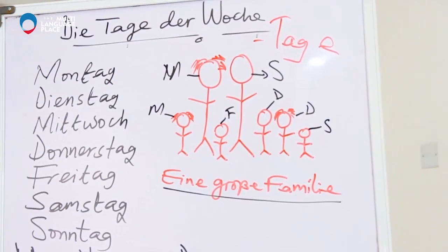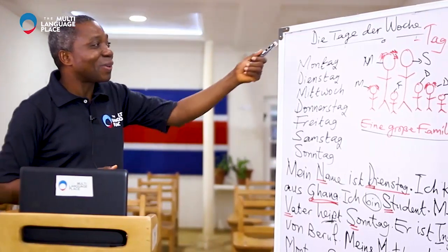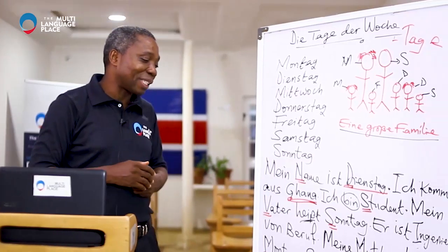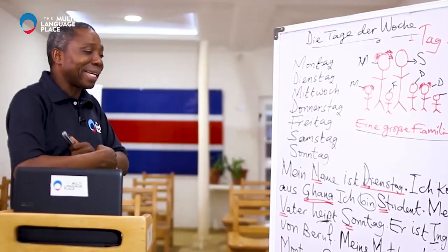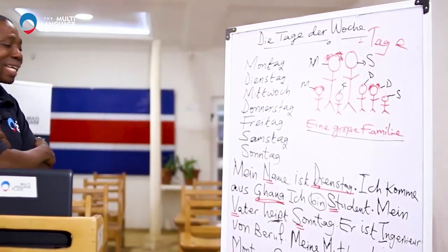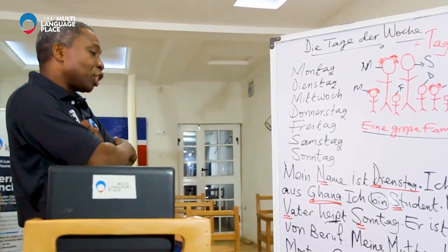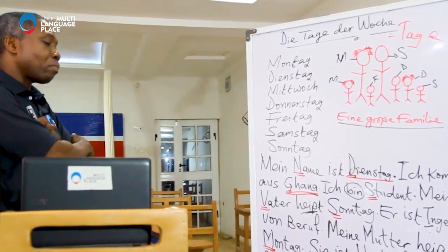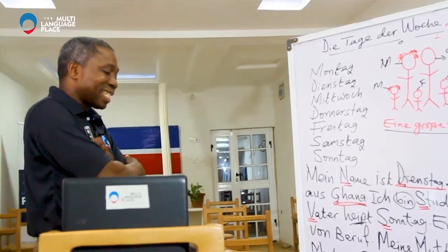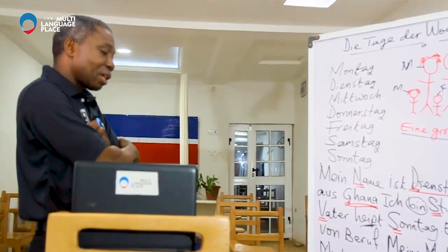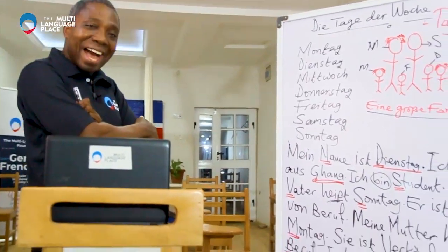Look at that wonderful big family — the usual family in Africa! With this text you should be able to remember the days of the week without problem. My name is Dienstag. Ich komme aus Ghana. Ich bin Student. Mein Vater heißt Sonntag — er ist Ingenieur von Beruf. Meine Mutter heißt Montag — sie ist Verkäuferin von Beruf. Ich habe vier Geschwister. Sie heißen Mittwoch, Donnerstag, Freitag und Samstag. Wir wohnen zusammen in Accra.